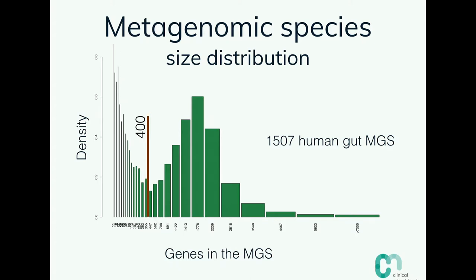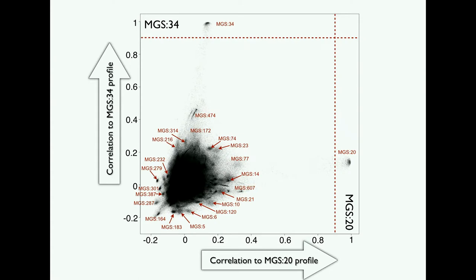These metagenomic species segregate extremely well. Plots trying to segregate genomes using just two samples or base composition give you islands of genes, but if you use many dimensions — in this case 2,300 human samples creating a hyperdimensional space — you can separate things extremely well. Here are 10 million genes plotted in a space showing correlation to the profile of two metagenomic species, and you see a very strong segregation with a very clear cut-off.